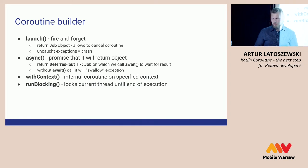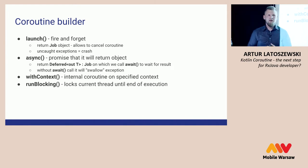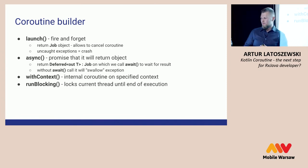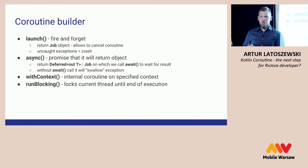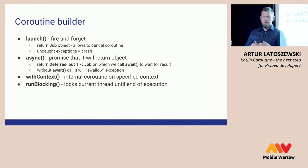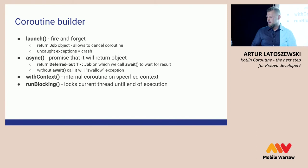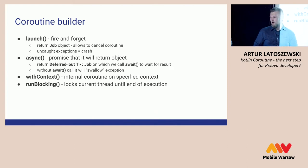We have coroutine builders because coroutines don't just appear from the sky. The first is "launch" — the most basic coroutine builder. It is fire-and-forget: it starts the coroutine and goes with the code. It returns a Job object, and the Job object allows you to cancel the coroutine. Any uncaught exceptions will cause a crash.